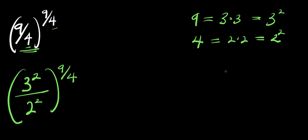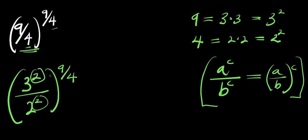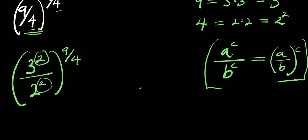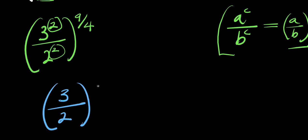Now remember, if you have a^c divided by p^c, this equals a divided by p, raised to the power of c. So I'm going to make use of this identity, because there is a 2 here and a 2 here. So what I'm going to do will be: I have 3 divided by 2, raised to the power of 2, and this is raised to the power of 9 over 4.